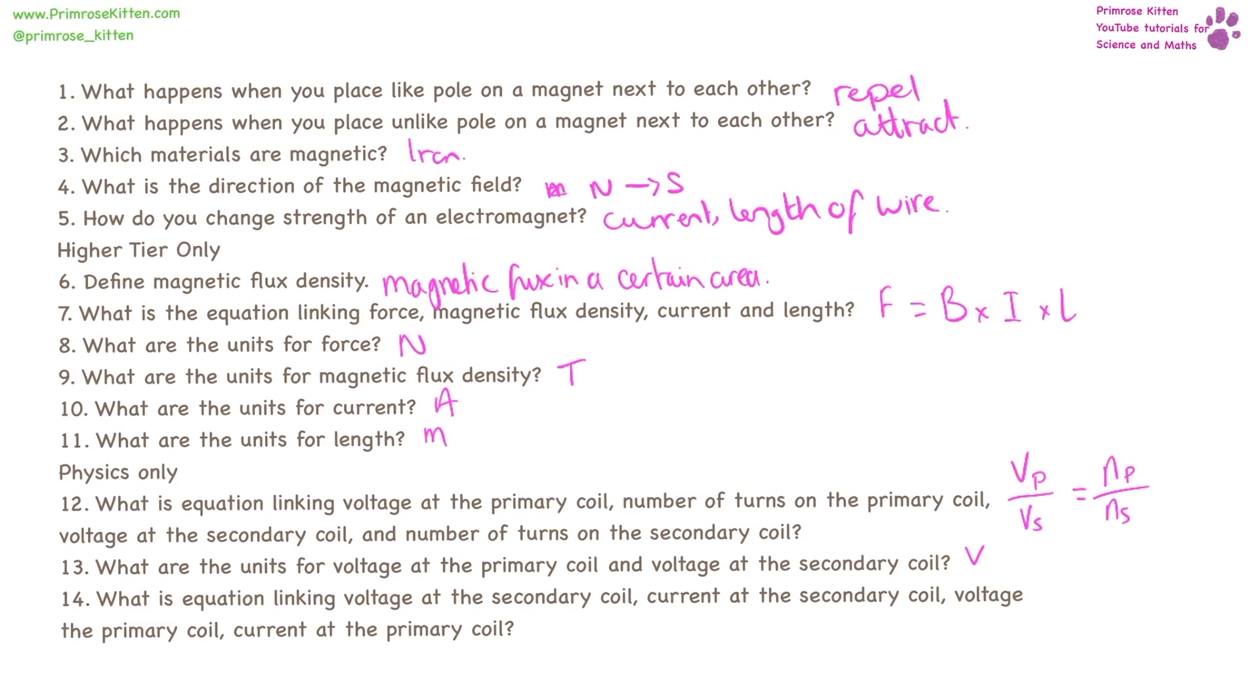And then the equation linking voltage at the secondary coil, current at the secondary coil, voltage at the primary coil, and current at the primary coil is: VsIs = VpIp. That is, voltage at the secondary coil times current at the secondary coil equals voltage at the primary coil times current at the primary coil.